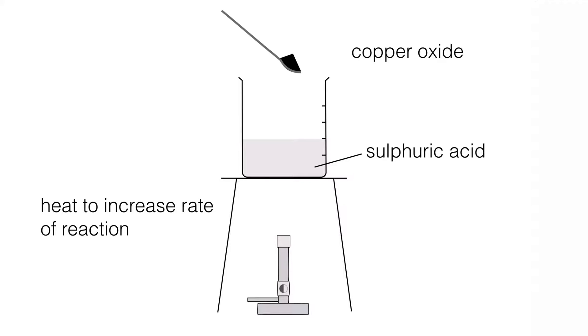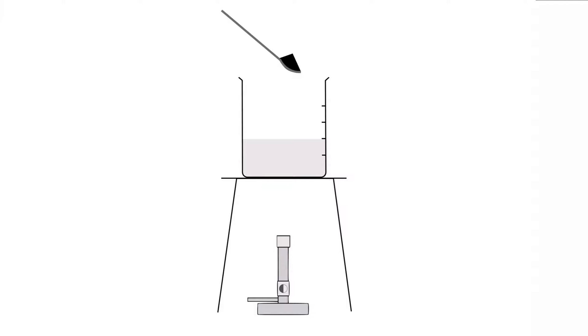Once we've done that, we can remove our heat and then add our copper oxide. So copper oxide is like a black powder and we can add that in. Once we've added that in, we would give that a stir and we would get the formation of our copper sulfate solution. And copper sulfate is blue, so you'd see a blue color.